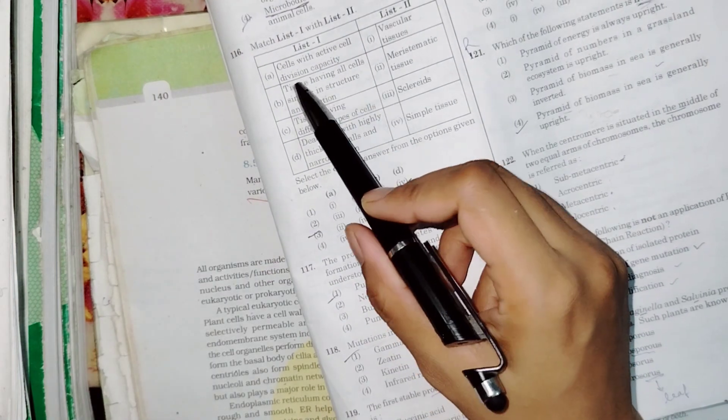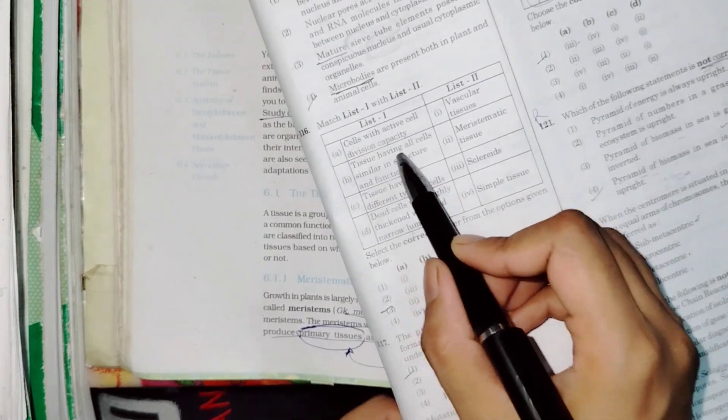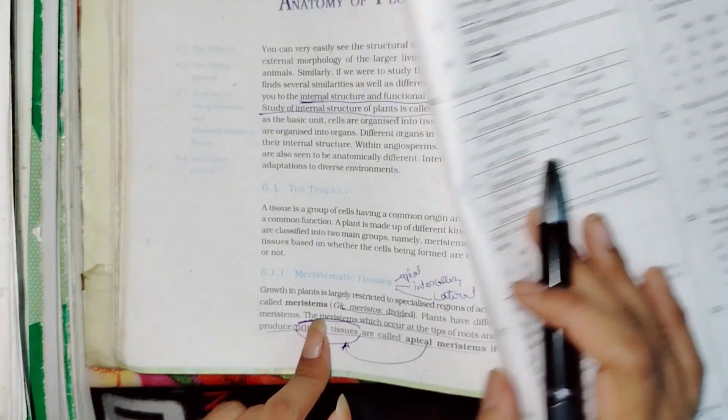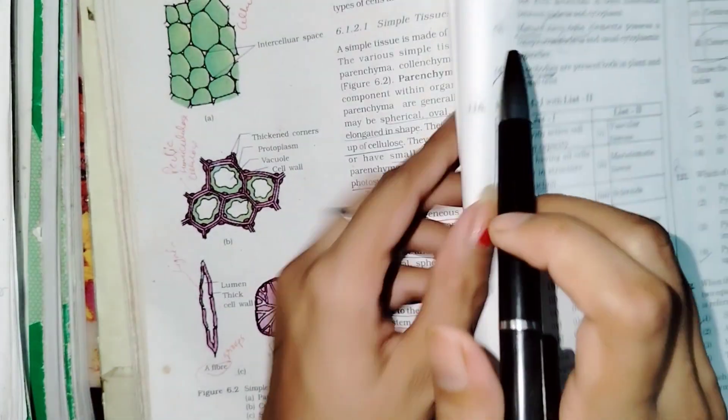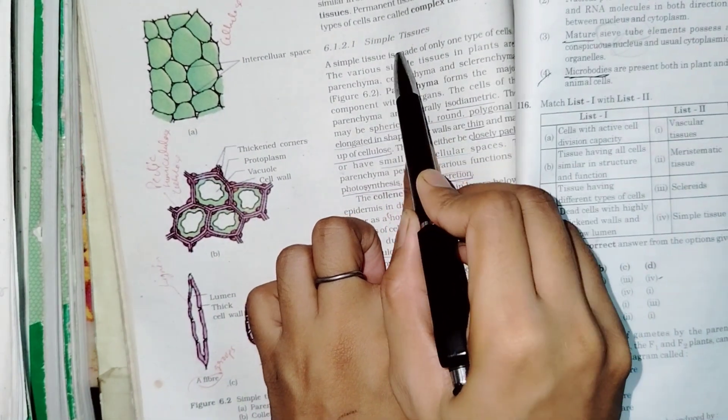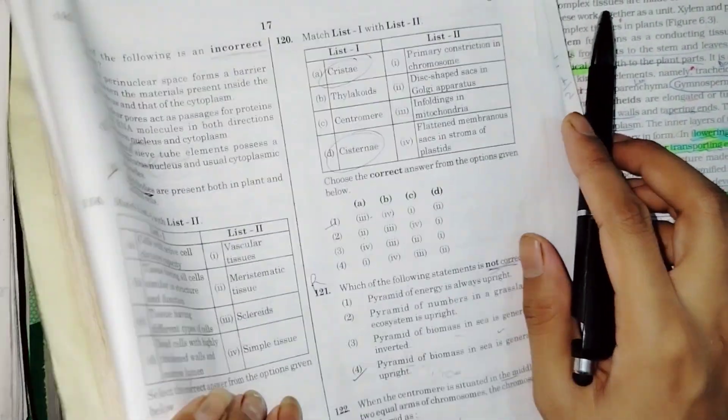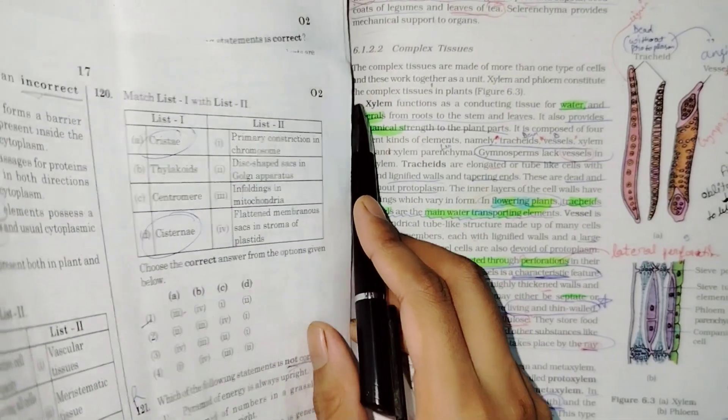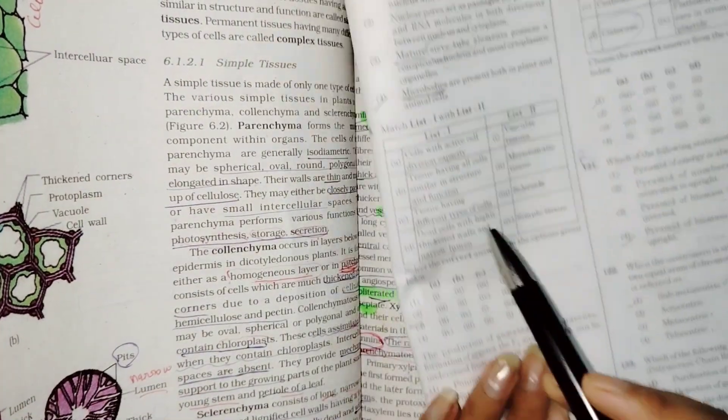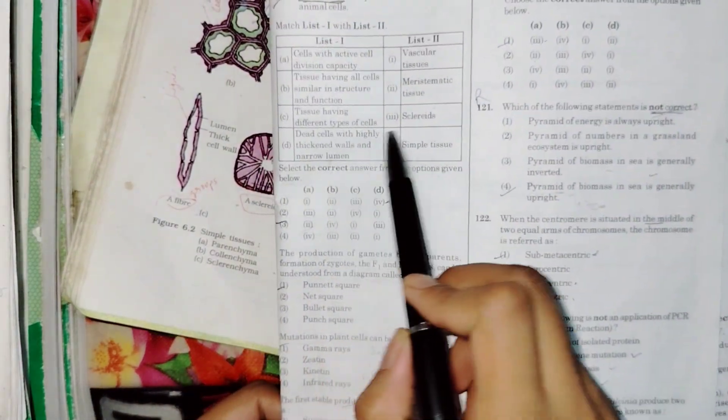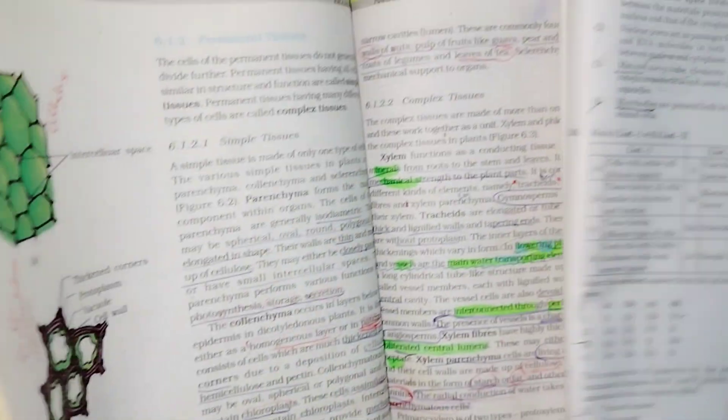Matching: cells with active cell division capacity - meristem. Tissue having all cells similar in structure and function - only one type of cell, simple tissue. Tissue having different types of cells - complex tissue, more than one type of cell. Dead cells with highly thickened wall and narrow lumen - scleroids. Scleroids, narrow cavities.